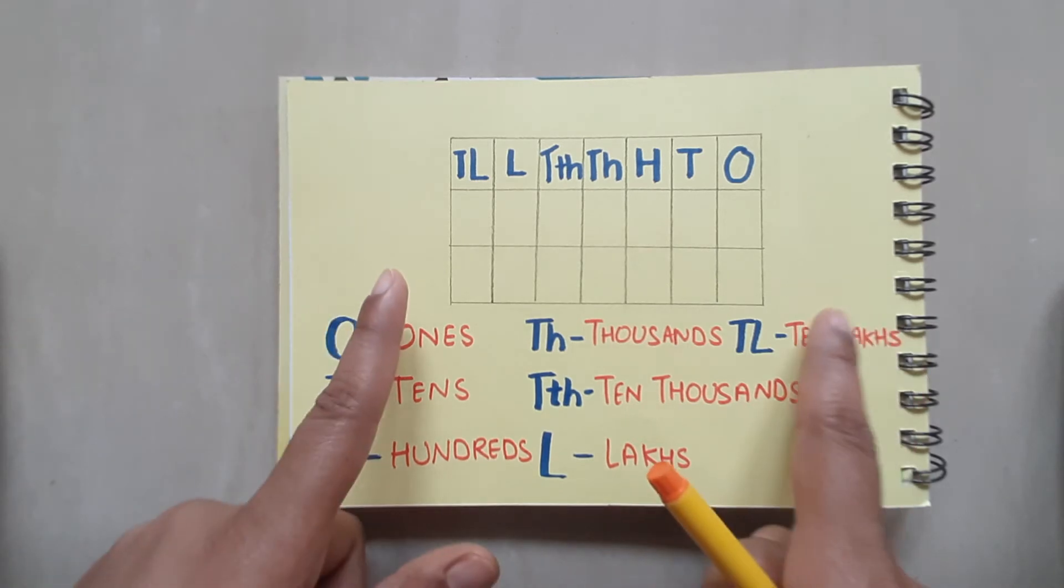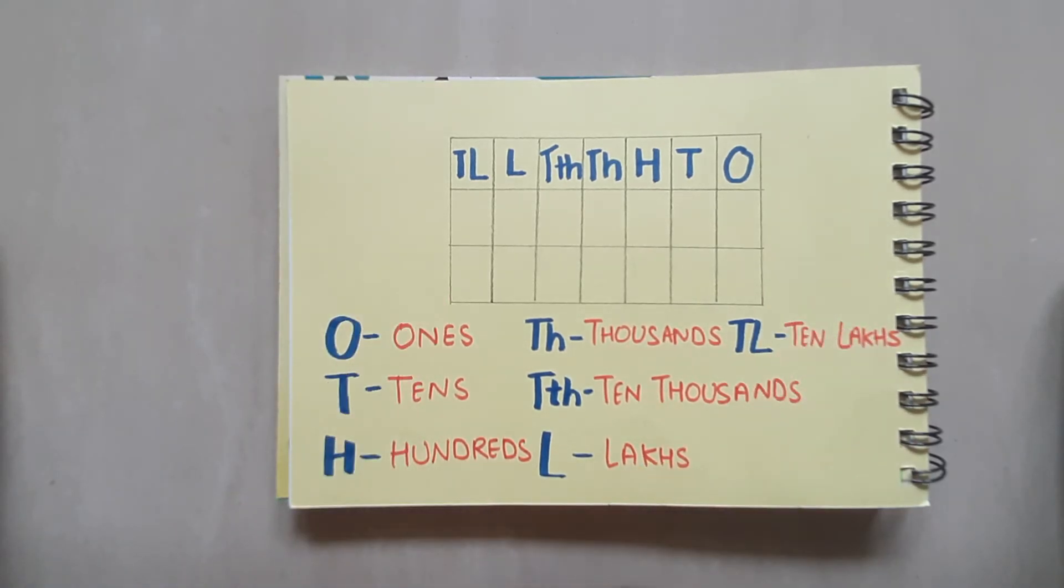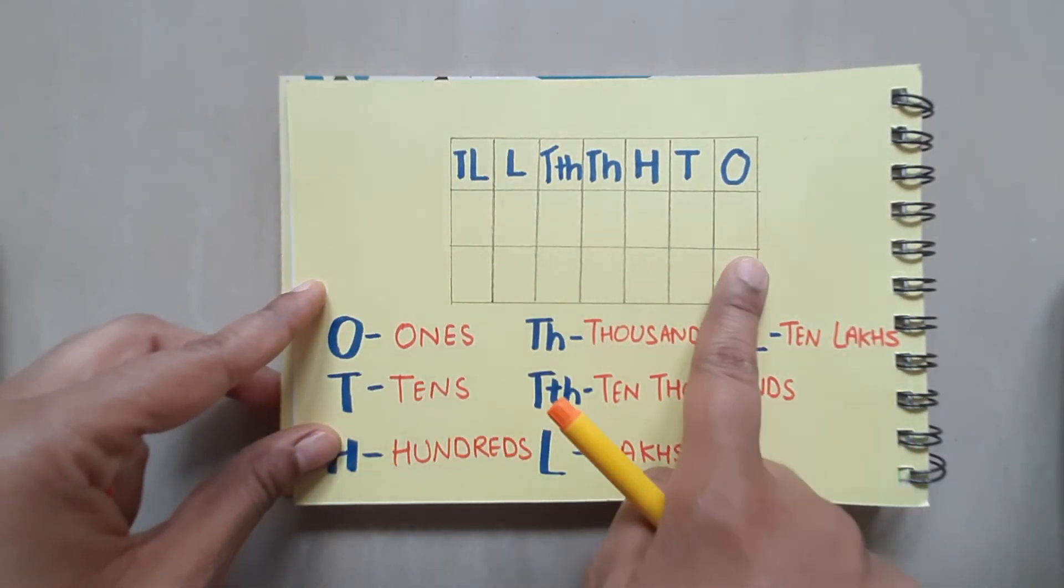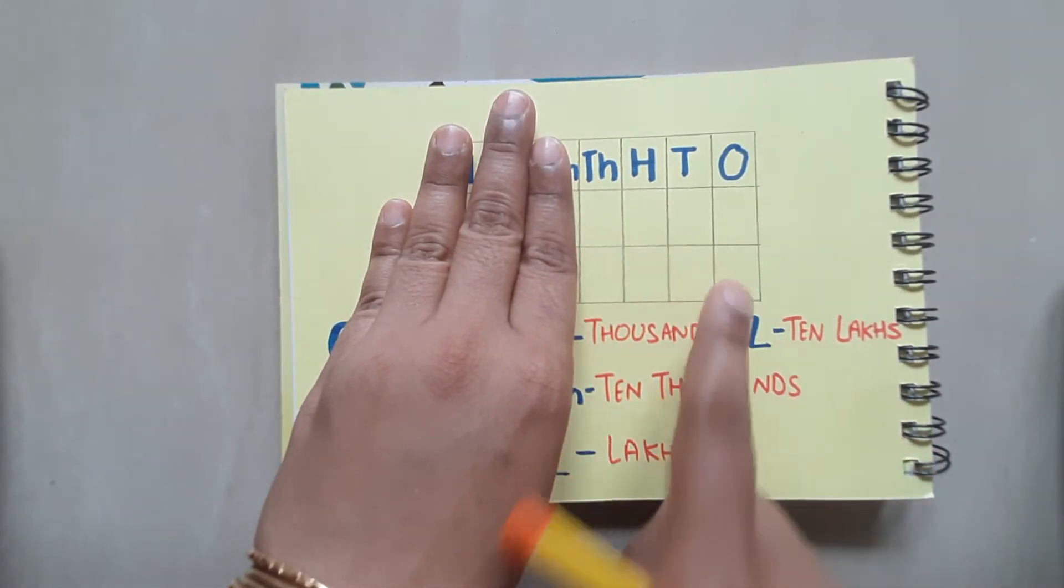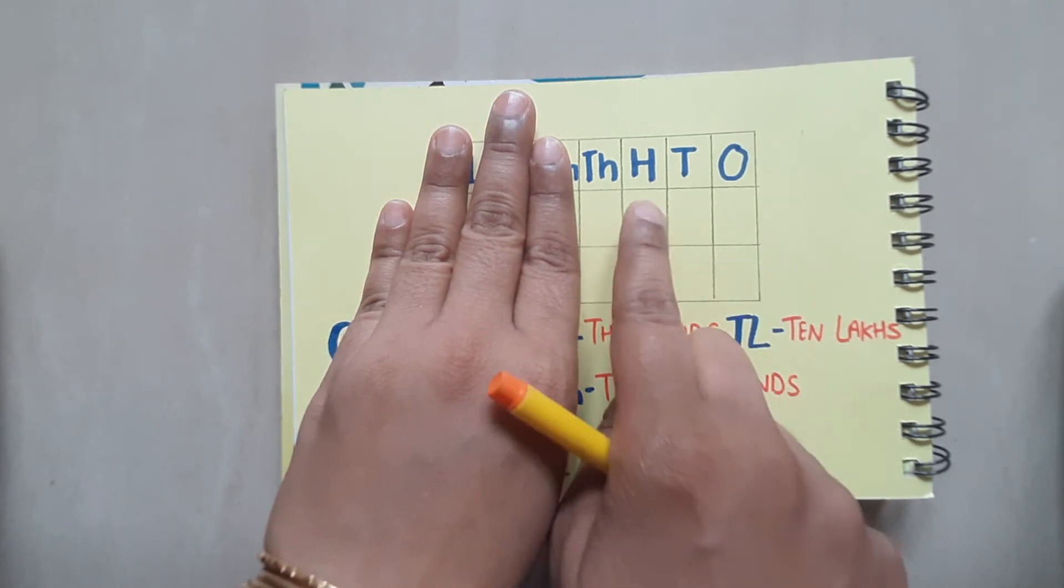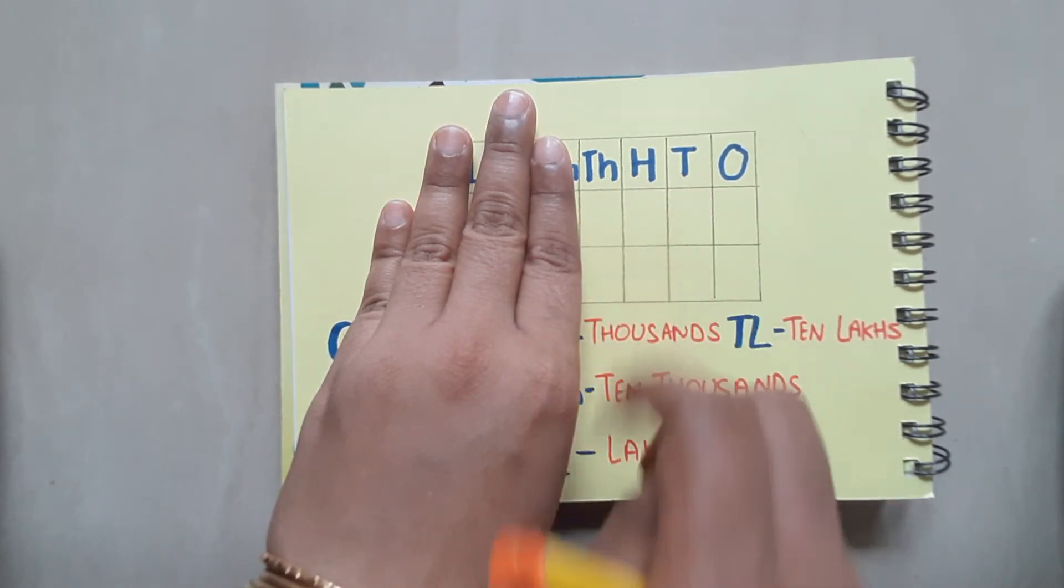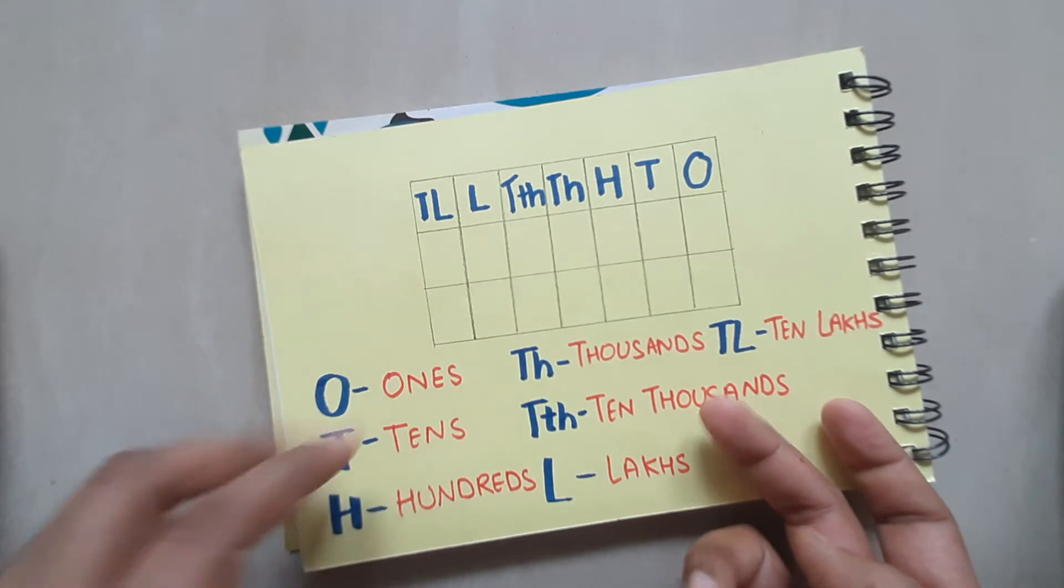Let me make the new place more clearer to you. This is the place value chart. Till here, till 1000s, you know how to make place value chart and put the numbers and know the places of each digit in a number.